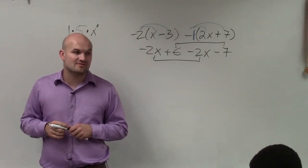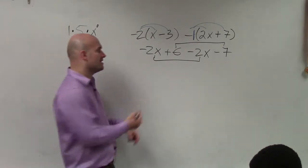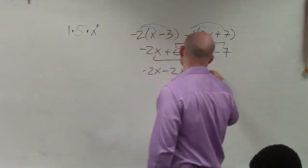Again, you don't have to rewrite it, Savannah. But I highly recommend, while you're still getting used to this, that you rewrite it. So therefore, I'd have negative 2x minus 2x plus 6 minus 7.